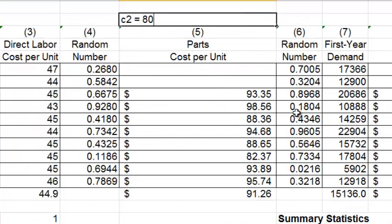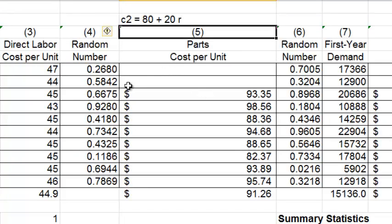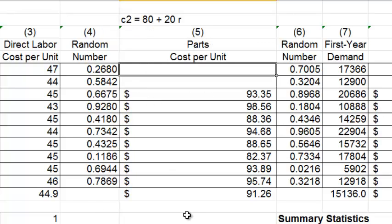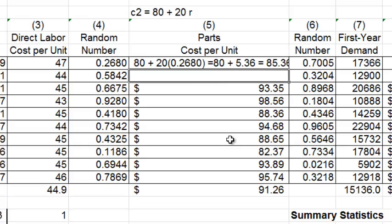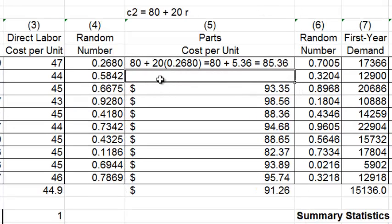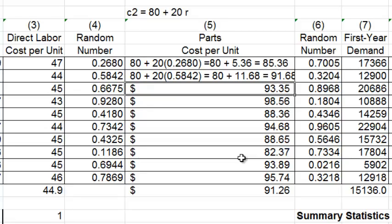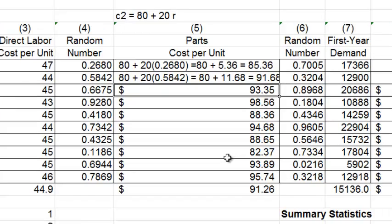Let's use this formula to generate the parts cost for the 10 trials. Remember, c2 equals 80 plus 20 times r. The random numbers to use are over here. So here we're going to do 80 plus 20 times 0.2680. This part is 5.36, so it's 80 plus 5.36 equals 85.36. Second one for practice: 80 plus 20 times 0.5842, that is 80 plus 11.68, giving us 91.68. This formula is very easy to apply. After you've done it twice, you're pretty much an expert. I think we could stop here.